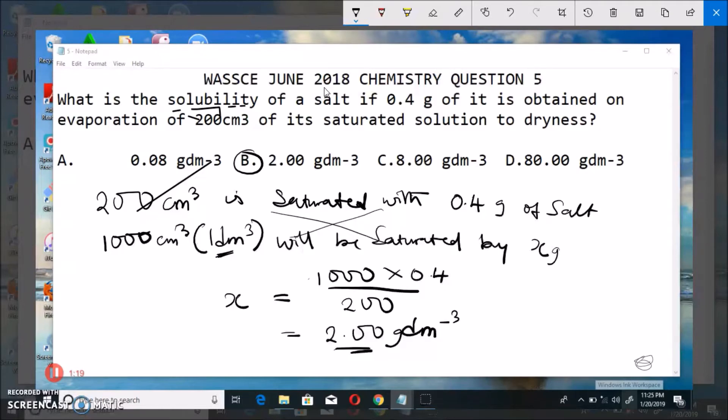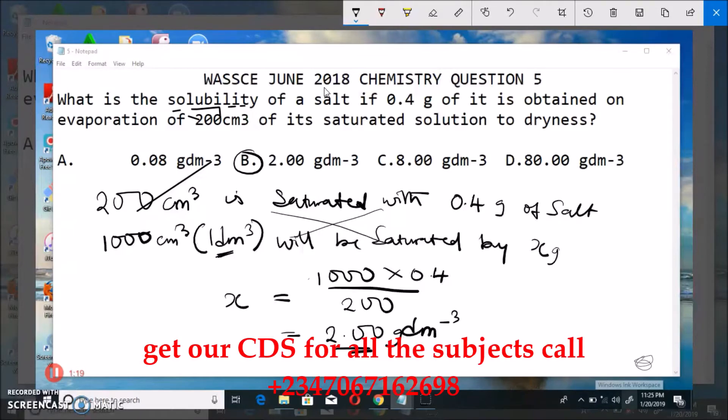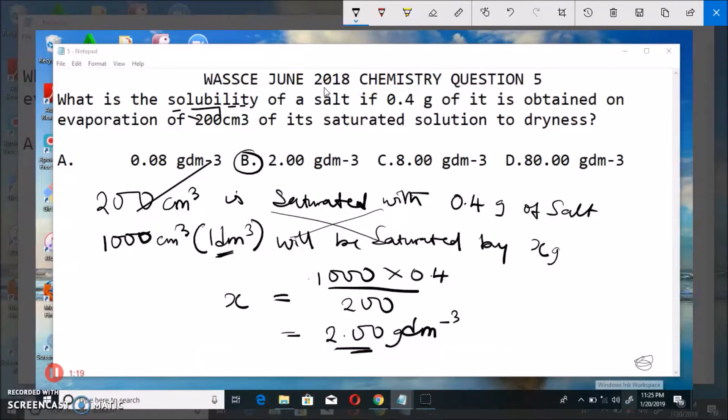So like I said before, solubility definition is that the solubility of a solute in a solvent at a particular temperature is the maximum amount of the solute in moles or grams that will saturate 1 dm³ of the solvent at that temperature. So once you are given your parameters, you have to make it for 1000 so that any amount of solute that can be gotten in 1000 is actually the solubility.